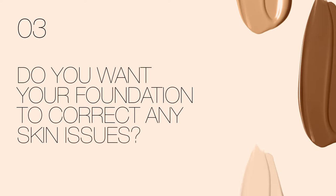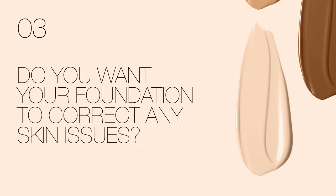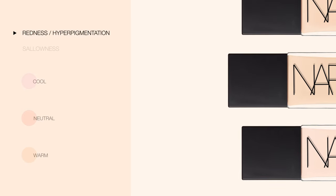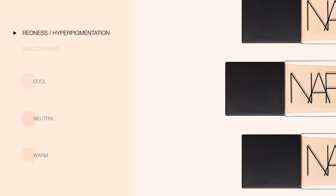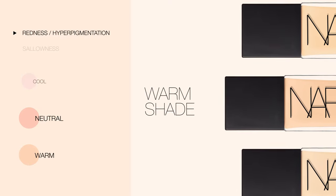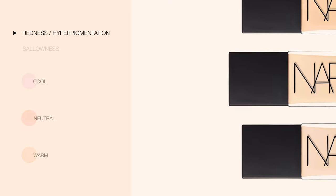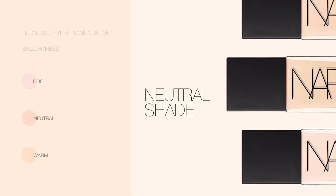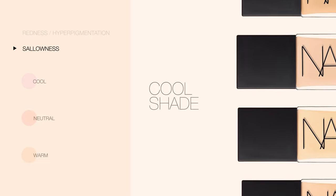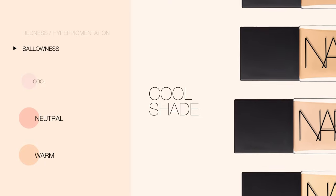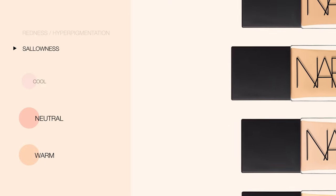Step 3: Do you want your foundation to correct any skin issues? If you want to neutralize redness or correct hyperpigmentation, go with a warm shade of foundation for warm and neutral undertones. Use a neutral shade if you are a cool undertone. If you want to counteract sallowness, go with a cool shade of foundation for warm and neutral undertones. Now you know what tone to select.